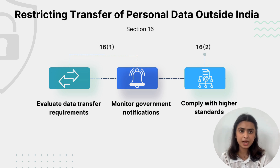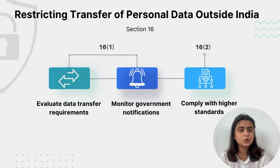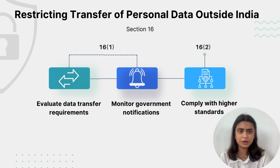For example, companies like IBM and Wipro evaluate data transfer needs by analyzing their international operations and ensure that personal data sent to their global headquarters is necessary for business operations and complies with local regulations.